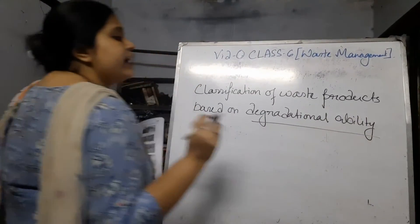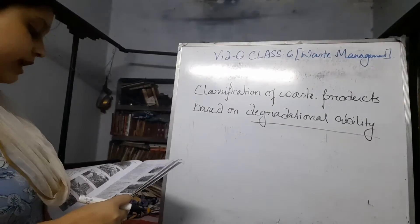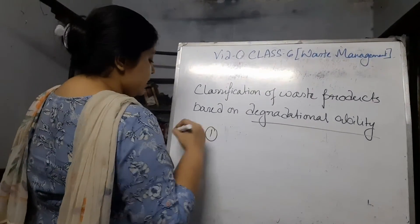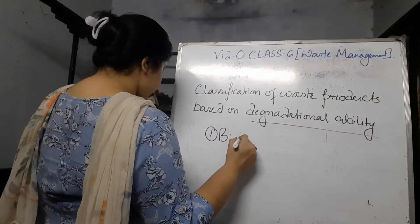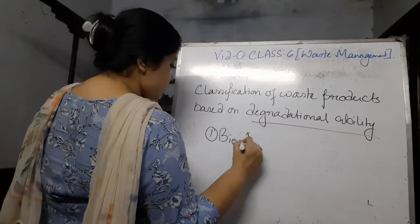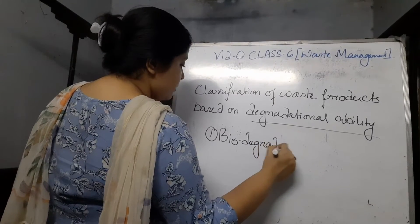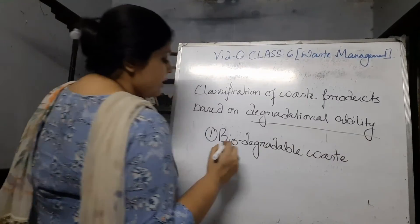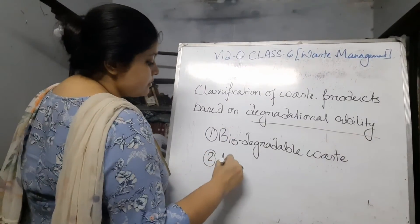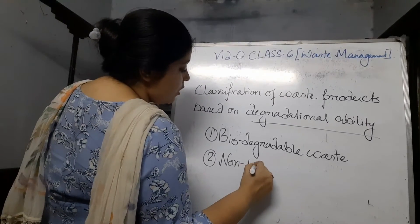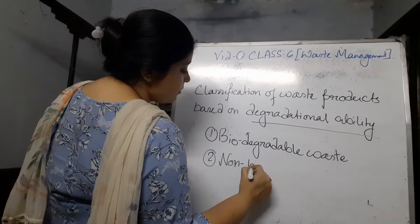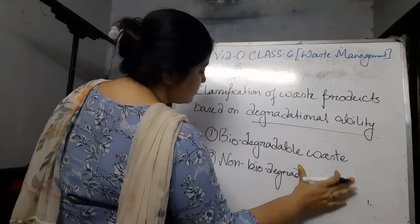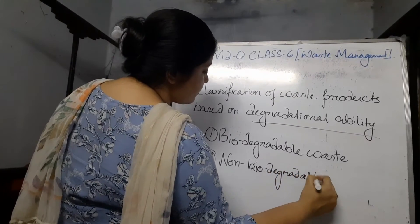According to degradational ability, waste products can be of two types: one is biodegradable waste, and the second is non-biodegradable waste.